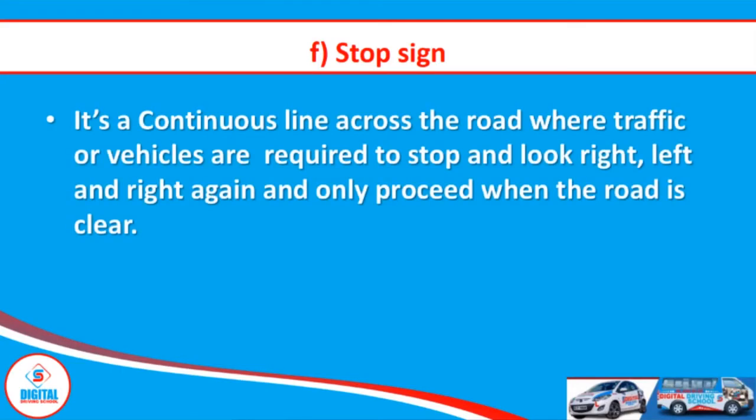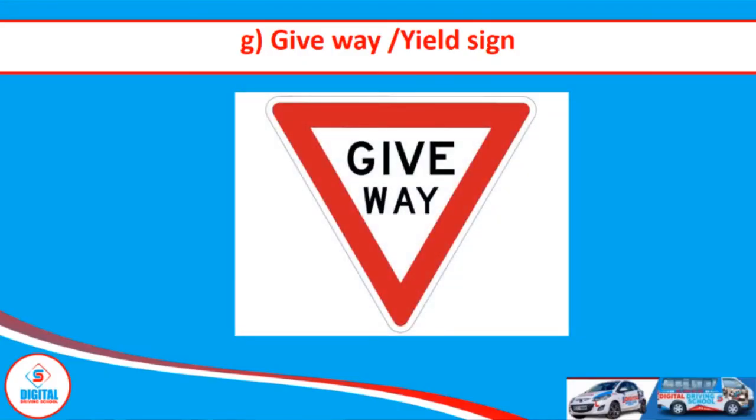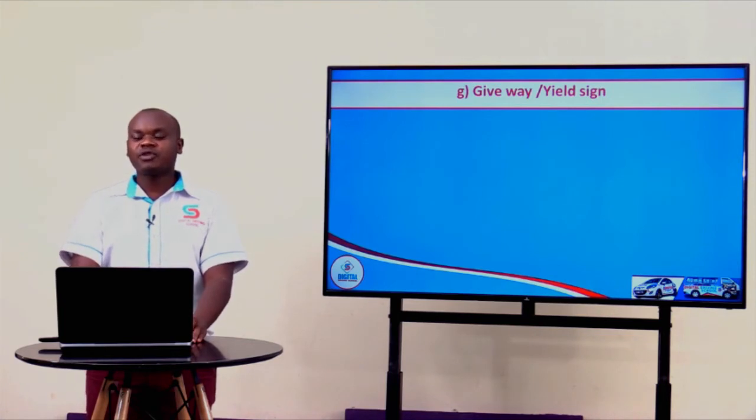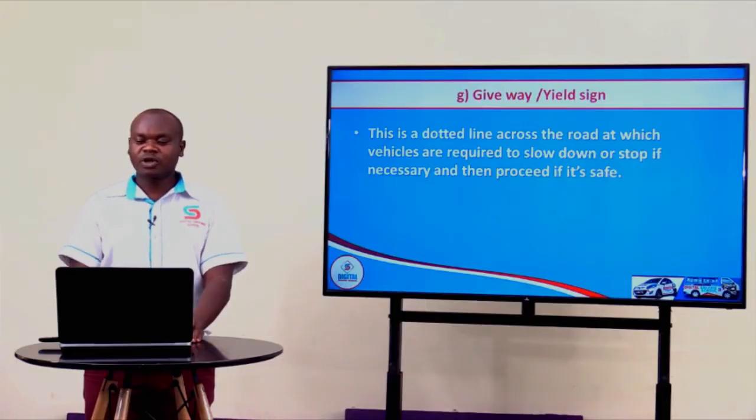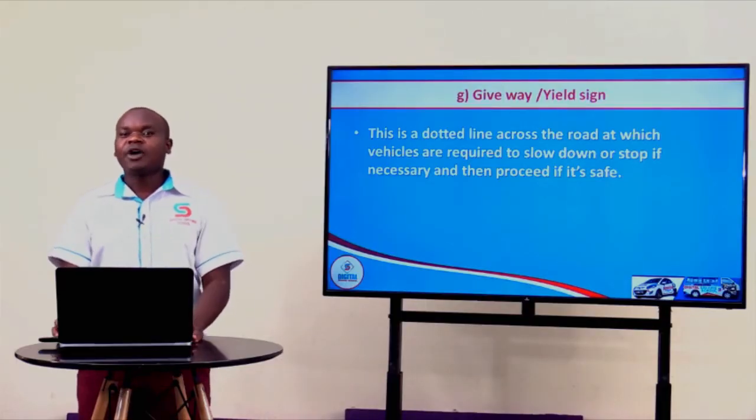Our next feature is the stop sign — a white continuous line across the road where traffic or vehicles are required to stop and look right and left, and if it is safe to do so, they can cross. Do not confuse a stop sign with the white continuous line on a one-way traffic road. A stop sign is across the road. We also have the giveaway sign or yield sign — a white broken line across the road at which vehicles are required to slow down or stop if necessary, then proceed if it's safe.